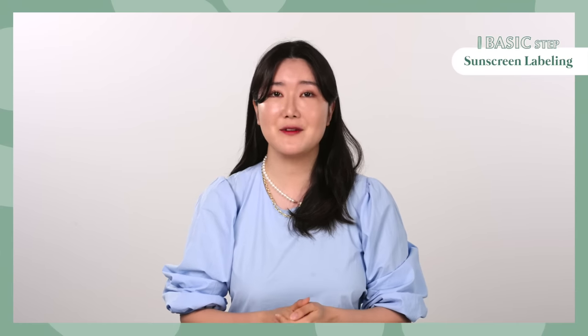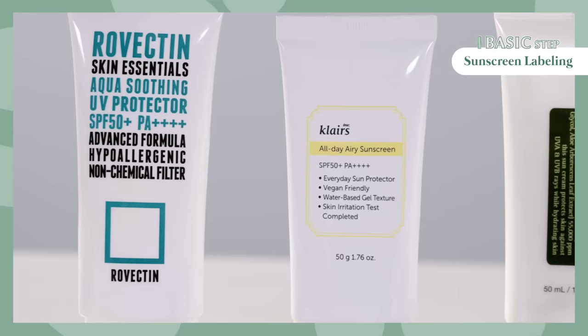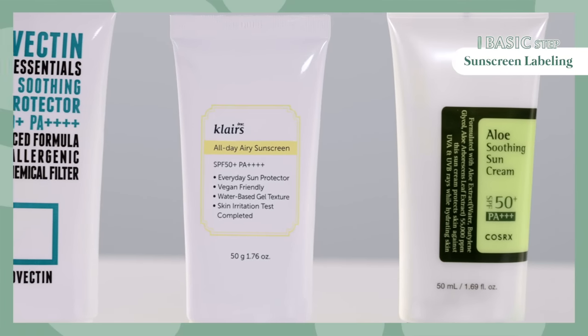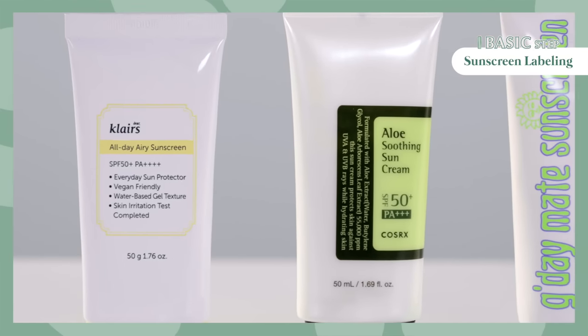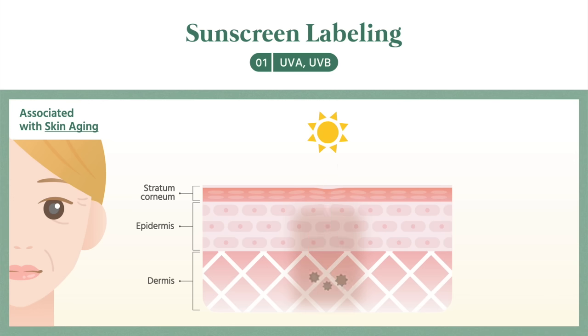If you look at the packaging of a sunscreen, you'll see that it tells you what type of sunscreen it is. That's why you need to understand what all the information means in order to choose a good sunscreen. First, you need to choose a sunscreen that blocks both UVA and UVB. UVA are ultraviolet rays with strong skin penetration, causing aging and affecting us the most.